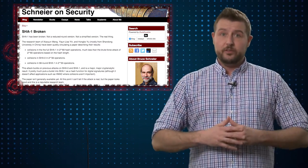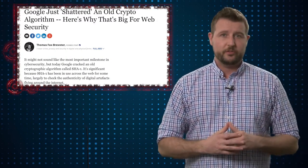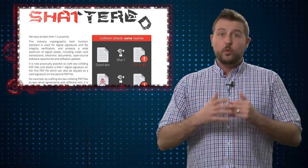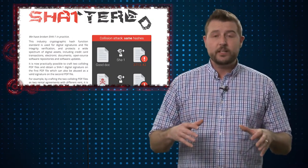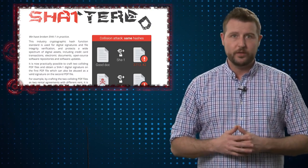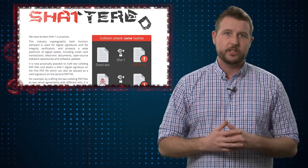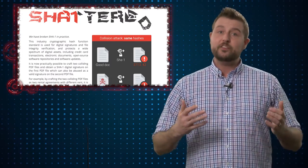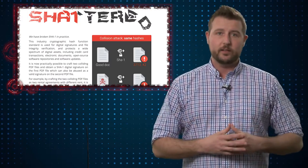That brings us to today's story. Today, Google, in partnership with Dutch researchers, released a site called Shattered IO, where they talk about this new shattered attack. Essentially, using some pretty heavy computing and GPU resources in Google's distributed network and machine learning, they've come up with what they call a practical way to actually generate SHA-1 collisions.